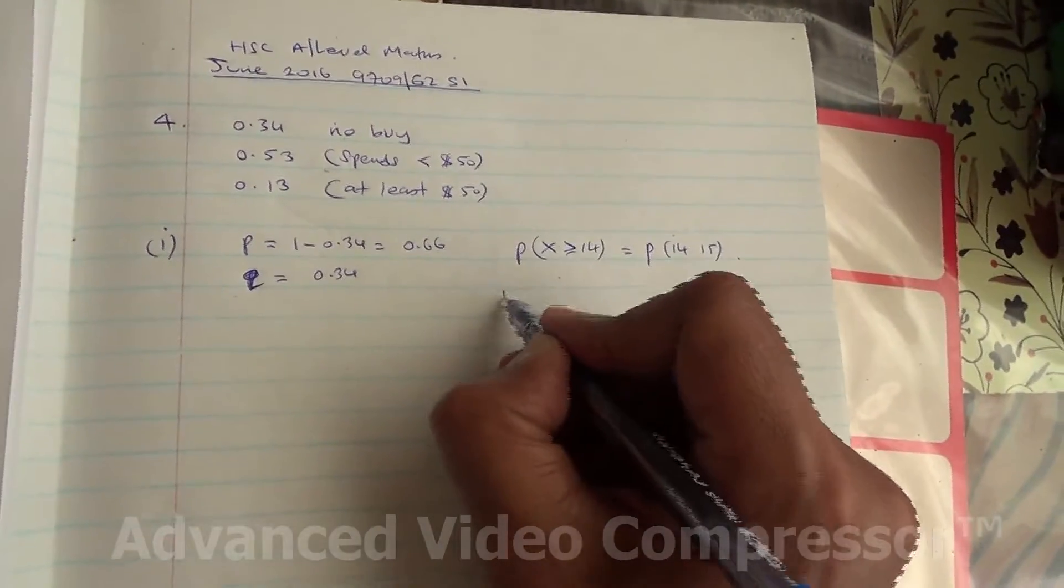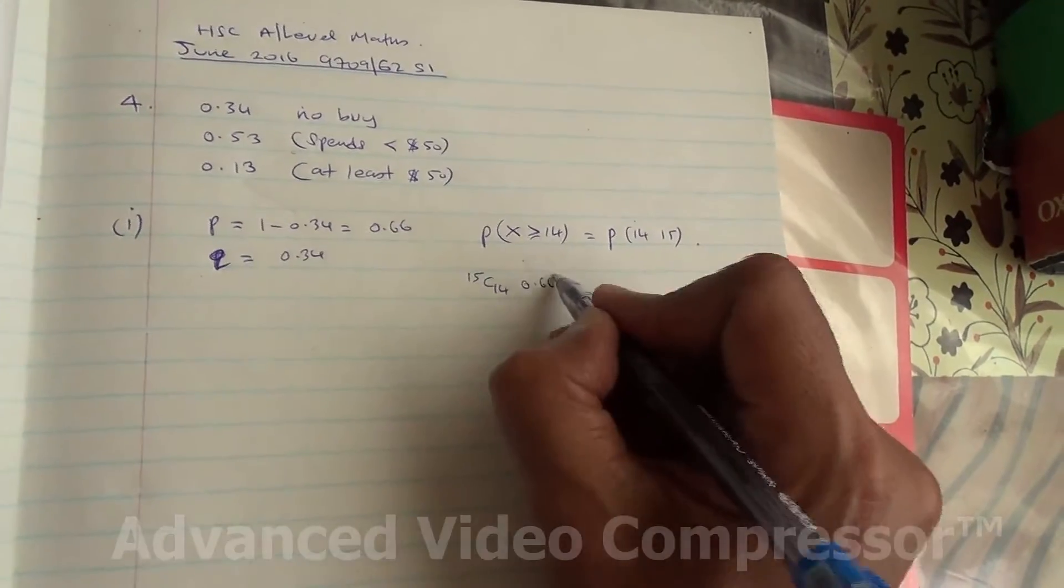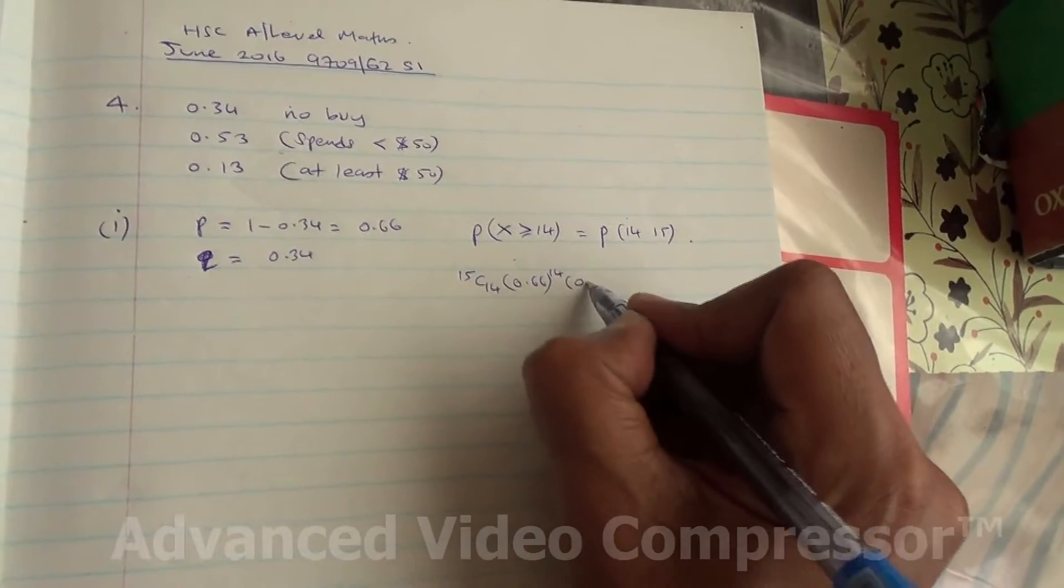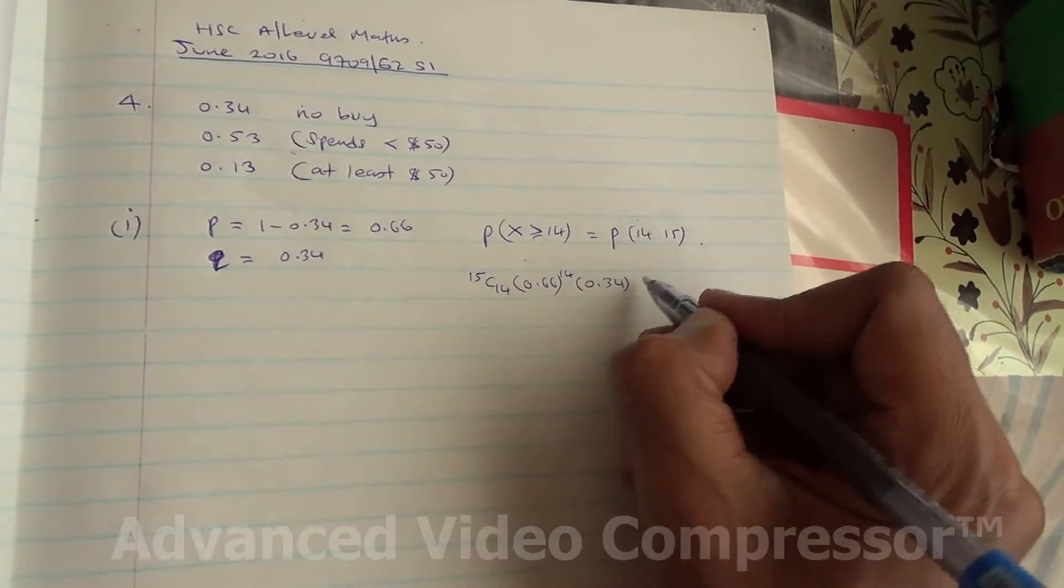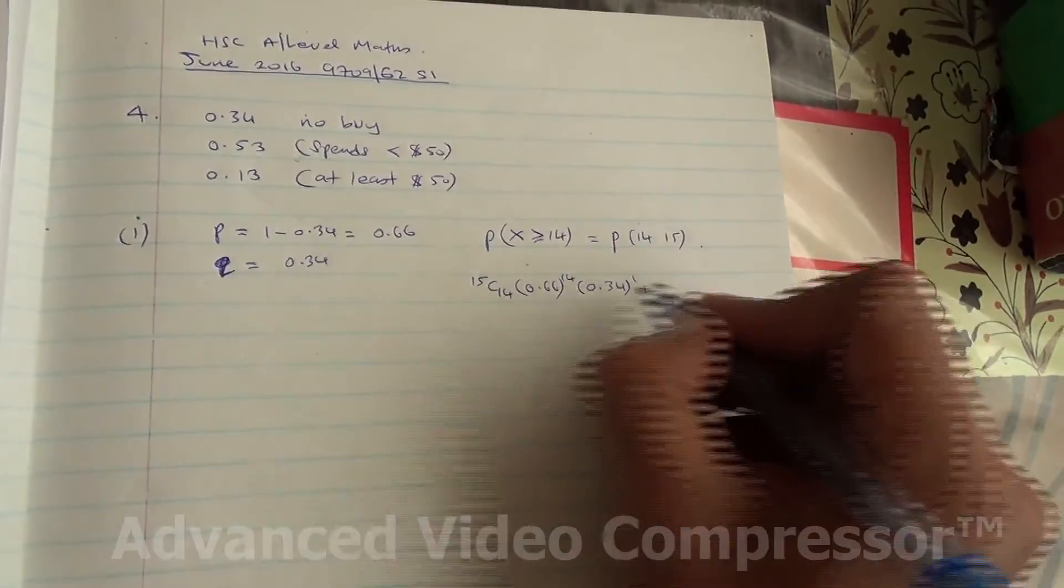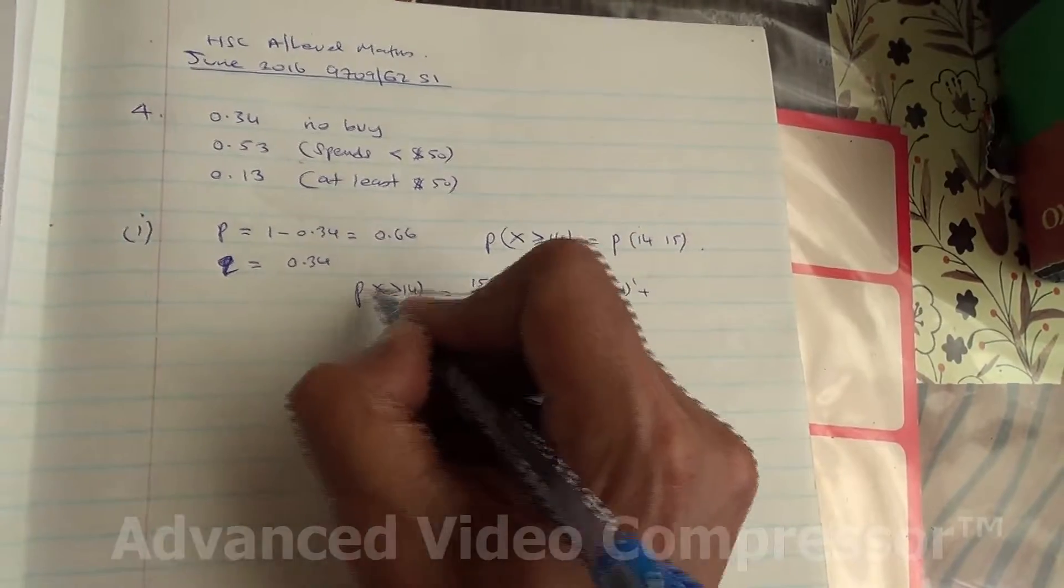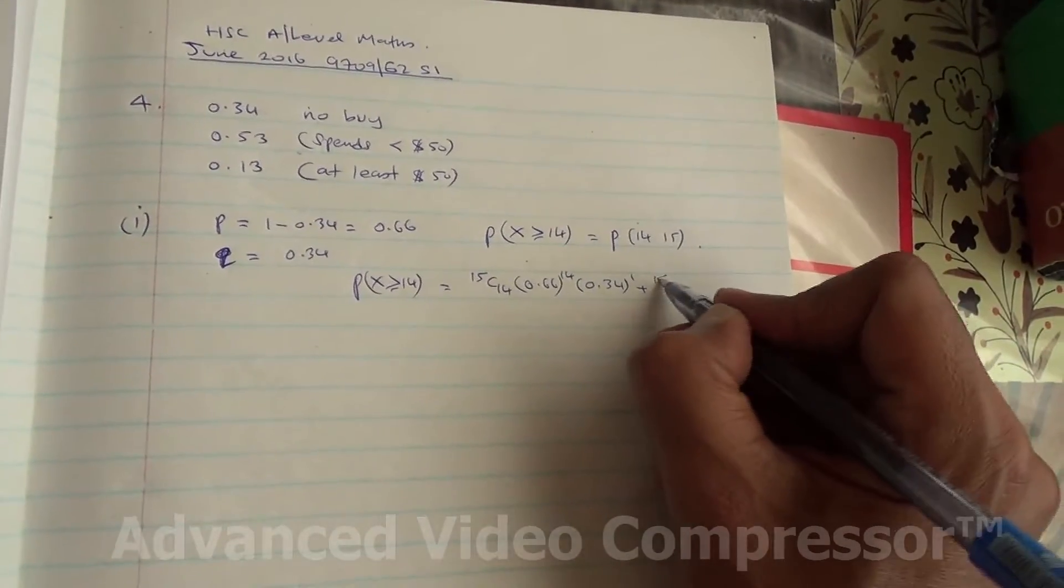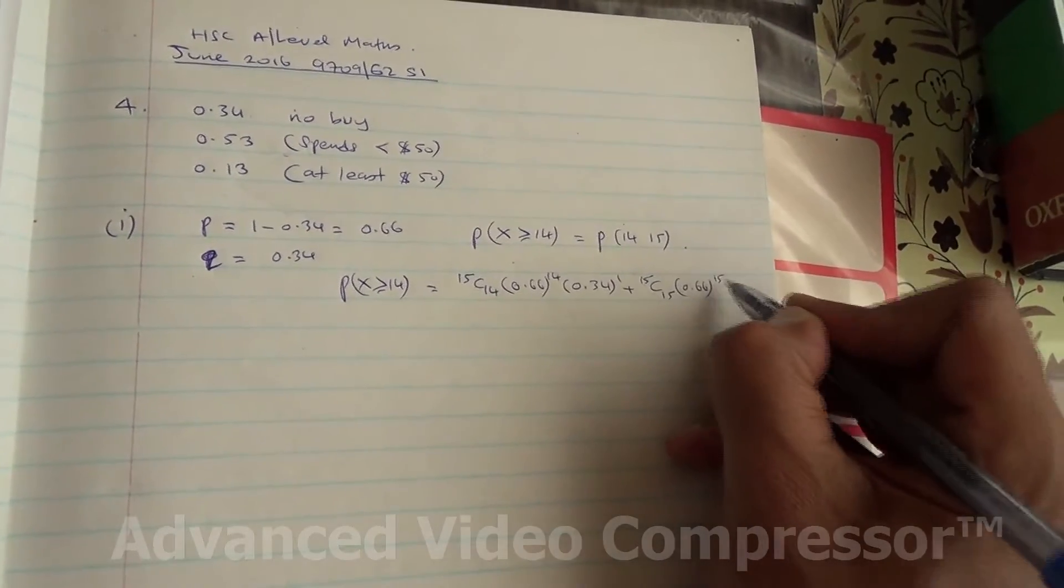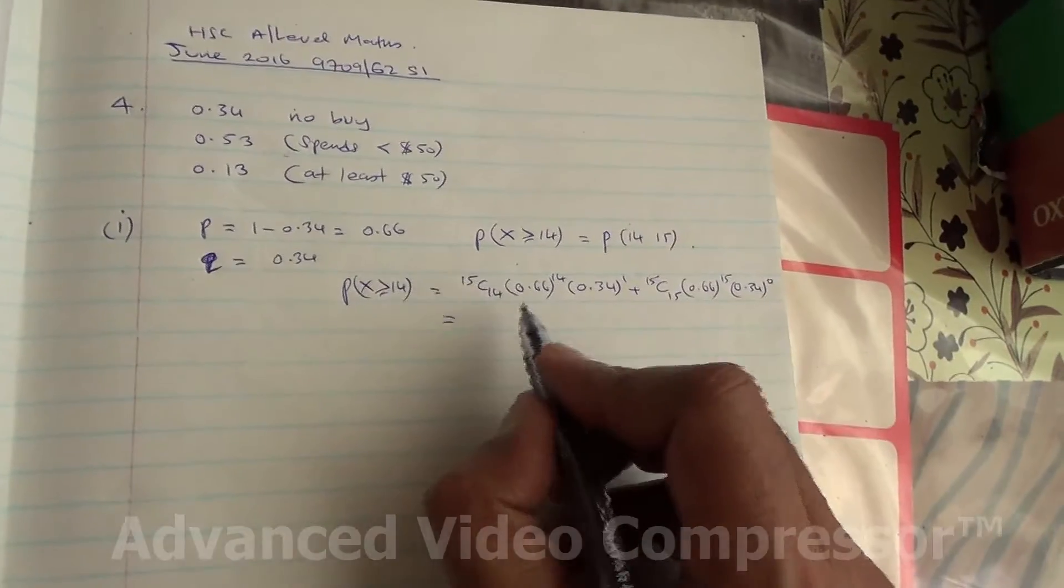Therefore, we are going to be saying 15 choose 14 of them is buying something. The probability of buying is 0.66, that's to the power of 14, times 0.34 to the power of 1. Plus the probability, 15 people and all of them are buying something, 0.66 to the power of 15 times 0.34 to the power of 0.